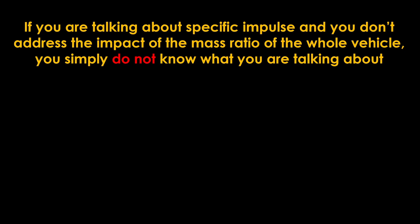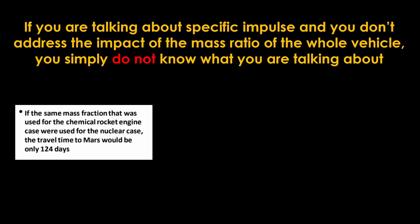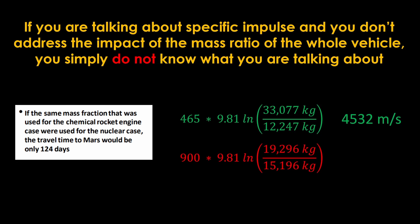I see this all the time with discussions of nuclear thermal engines. Here's one that I liked. If the same mass fraction that was used for the chemical rocket engine case were used for the nuclear case, the travel time to Mars would be only 124 days. It's a true statement, but tremendously misleading. Here are the numbers that we got from the Centaur example. A comparable nuclear engine has a mass 2950 kg heavier than the RL-10, so our empty mass goes up to 15,196 kg. Since we fill the tanks only with hydrogen, the propellant mass goes way down from 20,800 kg to 4,100 kg. The mass ratio goes from 2.7 down to 1.27.